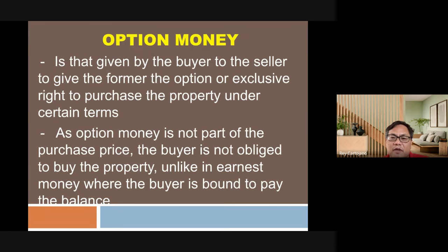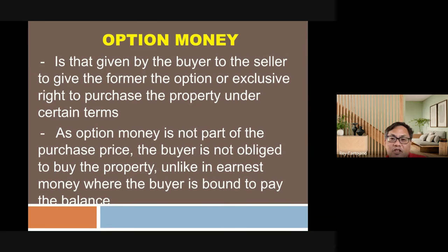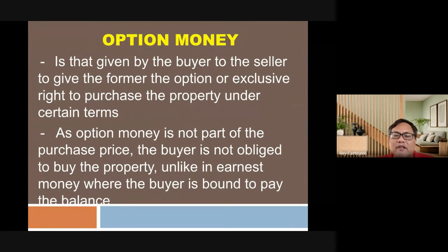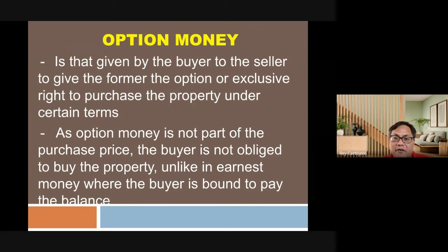Earnest money is contrasted with option money. Earnest money is part of the contract price, like a down payment, while option money is not part of the purchase price. Option money gives the buyer the exclusive right to purchase the property under certain terms. For example, 100,000 pesos for a 10-million-peso transaction gives the buyer 30 days exclusive option to acquire the property, and it is forfeitable if the buyer fails to pay within that period.